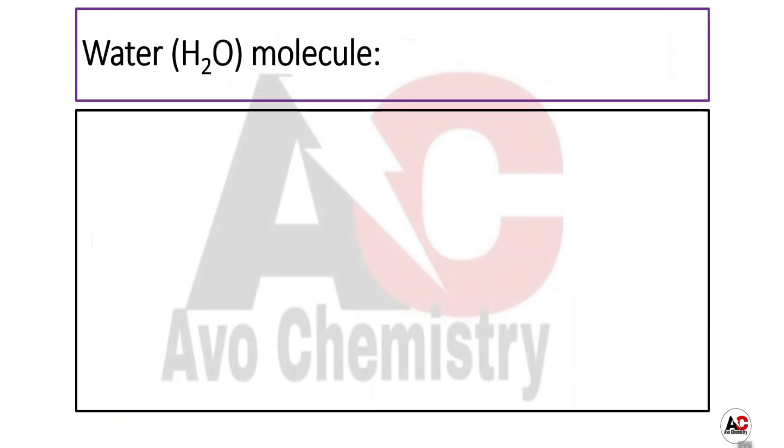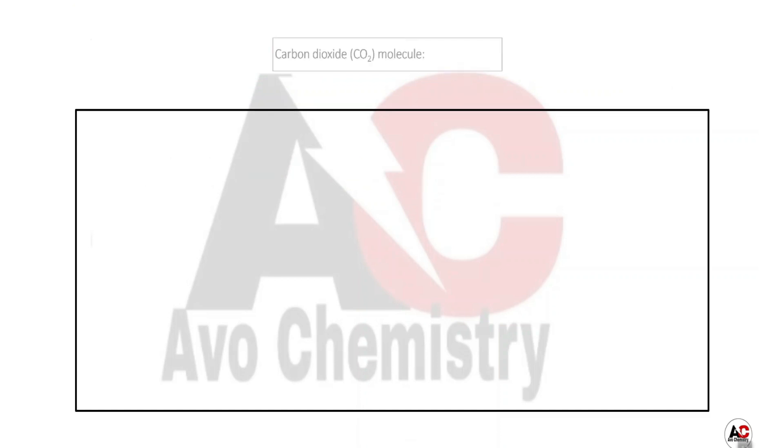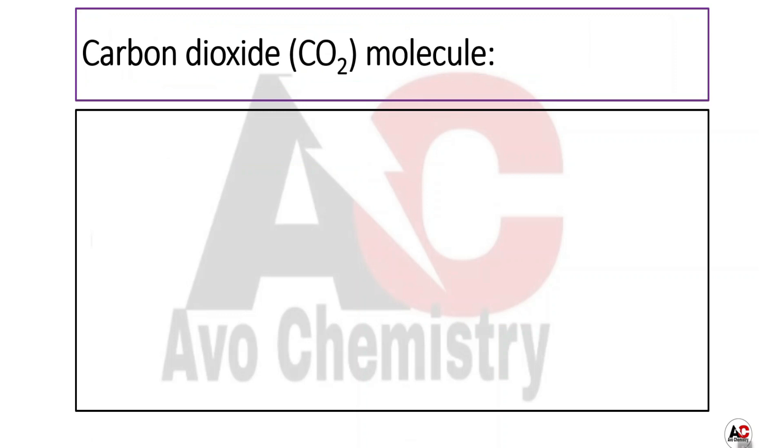Two hydrogen atoms and one oxygen atom are chemically bonded together to form a water molecule. Carbon dioxide CO2 is also a molecule - total three atoms, one carbon atom and two oxygen atoms are involved in making the carbon dioxide molecule.